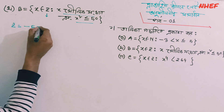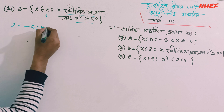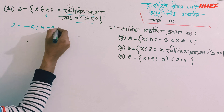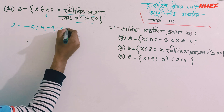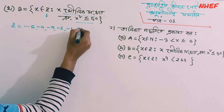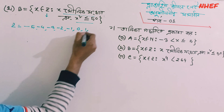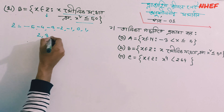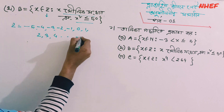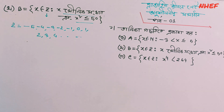So let's look at Z: minus 5, minus 4, minus 3, minus 2, minus 1, 0, 1, 2, 3, 4, dot dot dot. So minus 4...